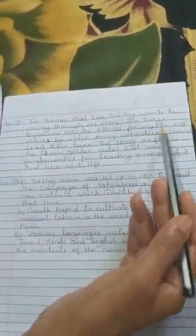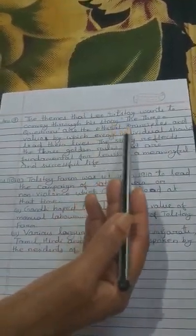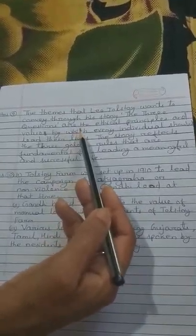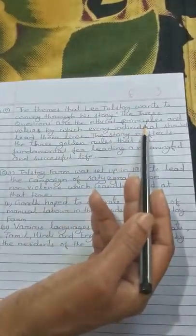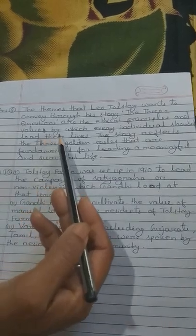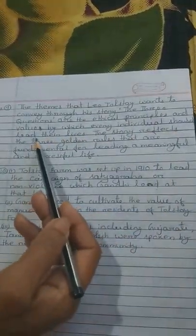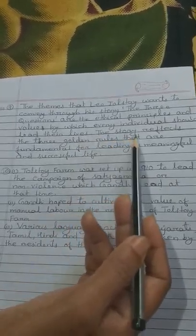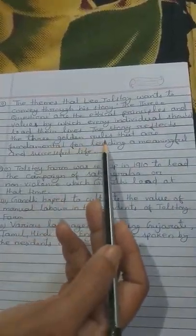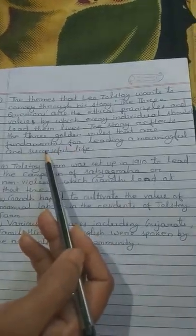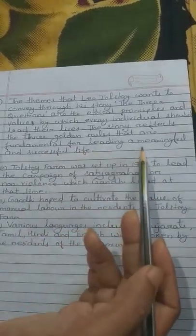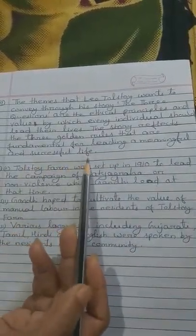Then answer number 9, the themes that Leo Tolstoy wants to convey through his story, the three questions are, the ethical principles and values by which every individual should lead their lives. The story reflects the three golden rules that are fundamental for leading a meaningful and successful life.